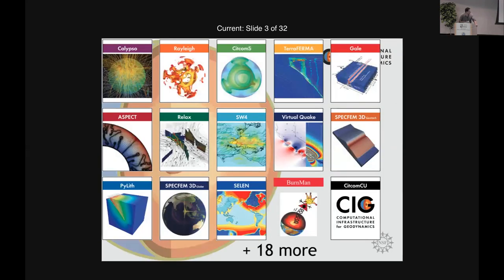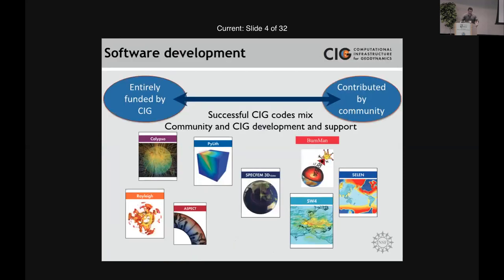There are over 33 codes at this point. The ones we use mostly for long-term tectonics include ASPECT and SNOC, also GALE a little bit but not so much anymore. The range of codes at CIG includes codes entirely funded and developed by CIG, and some developed independently and contributed. You can download any CIG code by going to geodynamics.org or github.com/geodynamics.